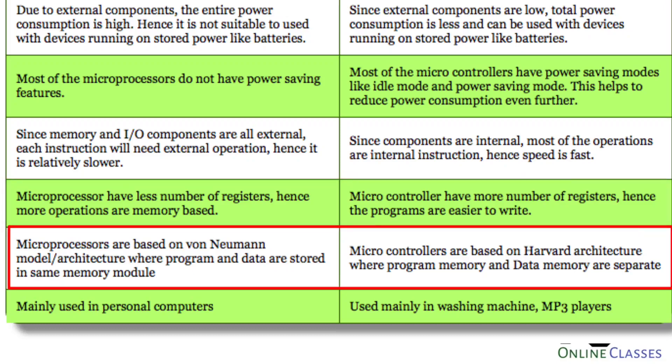Microprocessors are based on Von Neumann architecture. In Von Neumann architecture, the program and data are stored in the same memory module — program and data share common memory. Microcontrollers are based on Harvard architecture. In Harvard architecture, the program memory and data memory are separated.